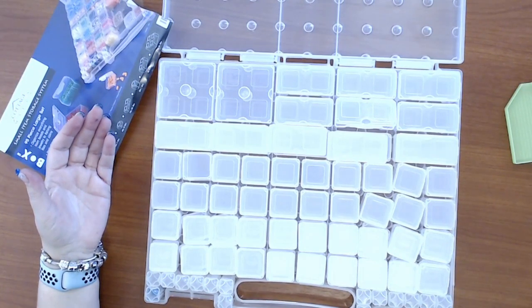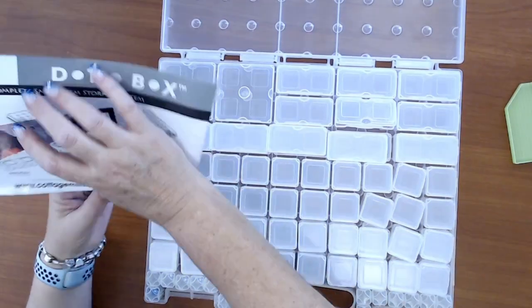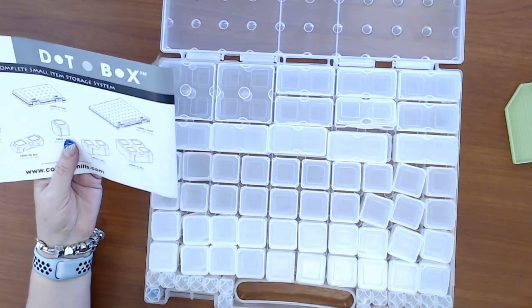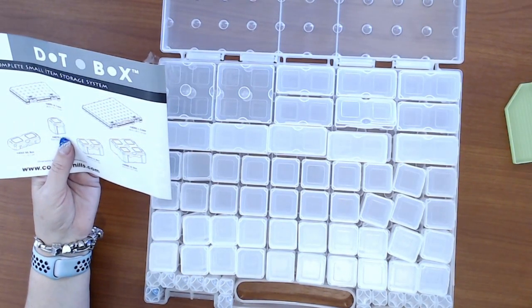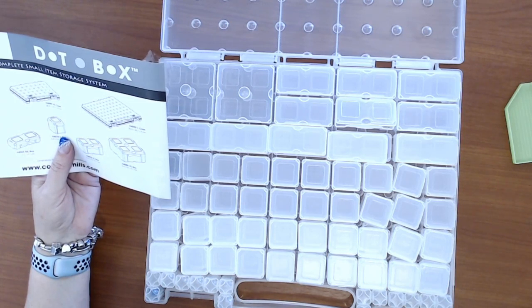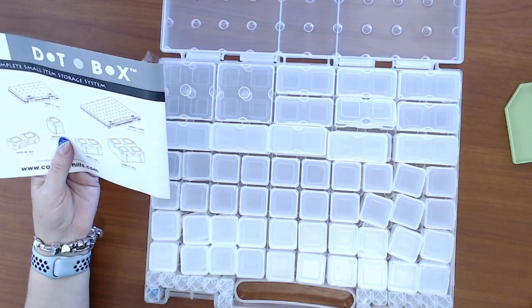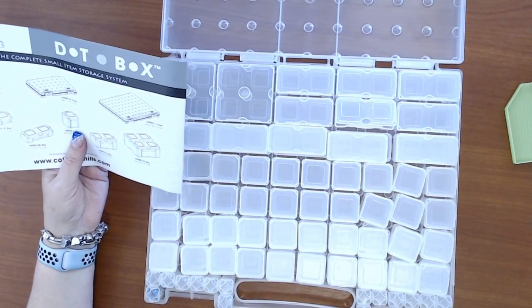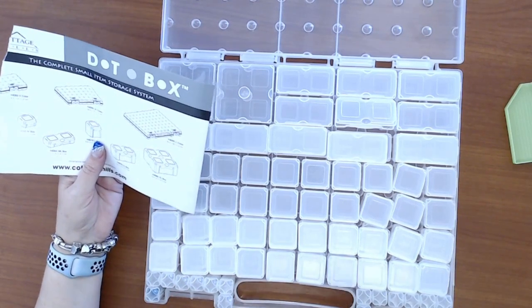The cottage mills, they do have the smaller ones. What ones have they got? It's called a dot box. They've got the large, there's a medium.